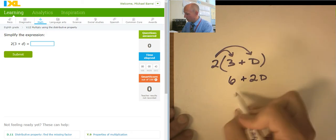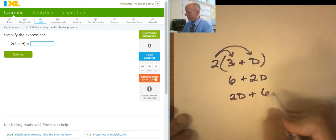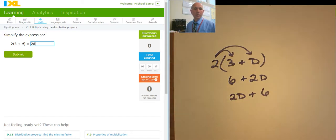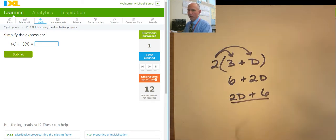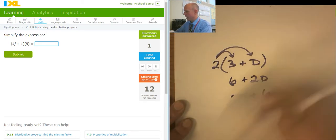I like it better written as 2D plus 6. IXL will take it either way. 2D plus 6. This is just a nicer way of writing it, especially as you get into other math classes.